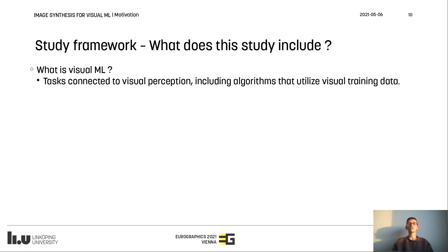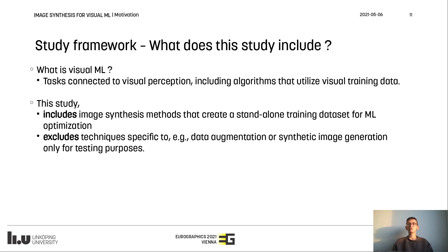To set the ground, we start with the definition of visual machine learning. This concerns all tasks connected to visual perception and includes algorithms that use training data. Furthermore, this survey includes image synthesis methods that create whole standalone training datasets and excludes all the rest, like data augmentation methods and synthesized testing datasets.